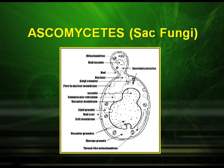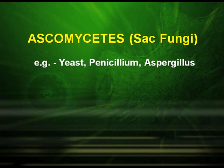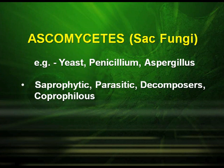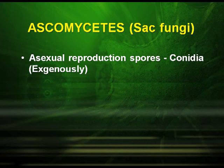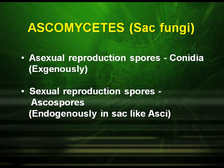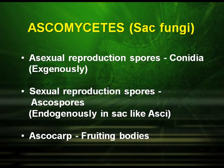Ascomycetes are the sac fungi — example, yeast, Penicillium, Aspergillus. They are saprophytic as well as parasitic, and act as decomposers as well as coprophilous organisms. The mycelium is branched and septate. Asexual spores are the conidia, which are exogenously borne. The sexual spores are the ascospores, which are endogenously produced in sac-like asci. Their fruiting bodies are known as ascocarps.